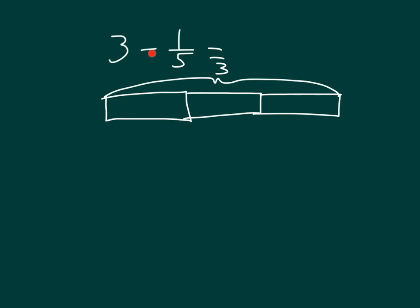And then if we're going to subtract 1 fifth, well, we don't have to draw fifths on every single one of these. We just have to draw fifths here on our 1, where we will go ahead and subtract one of those. So again, we drew a tape diagram representing 3 wholes, and then we partitioned 1 into 5 parts to get fifths.